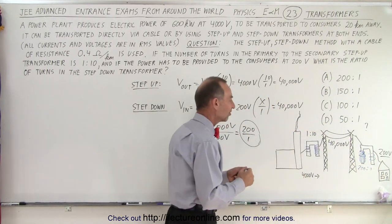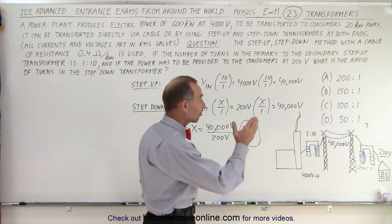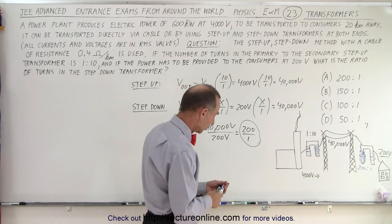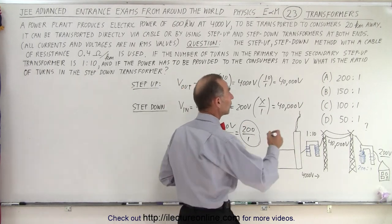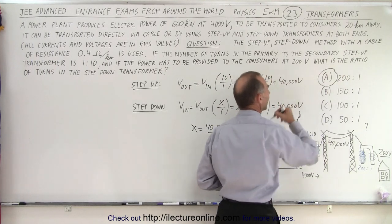So the ratio will be 200 to 1 on the step-down to bring the voltage all the way from 40,000 volts down to 200 volts, and you can see that the answer in this case would be answer A.